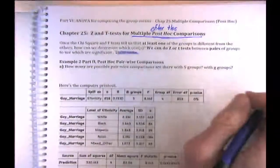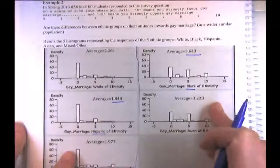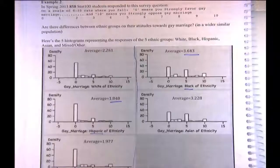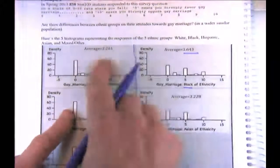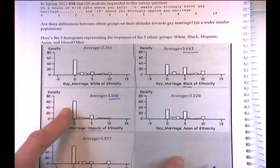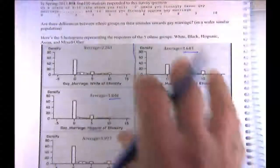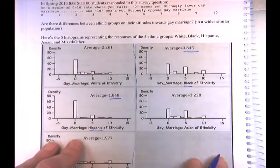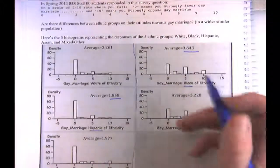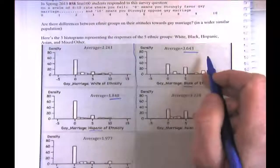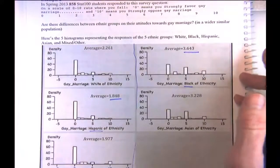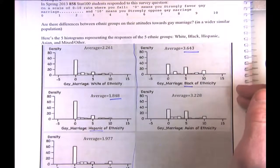Post-hoc means after looking at the data. If we cherry-pick the most extreme difference after seeing the data, even when nothing is going on, groups won't all have exactly equal sample means. If you put all 858 ratings in a box, shuffle them, and randomly assign them to groups, some will vary just by the luck of the draw.